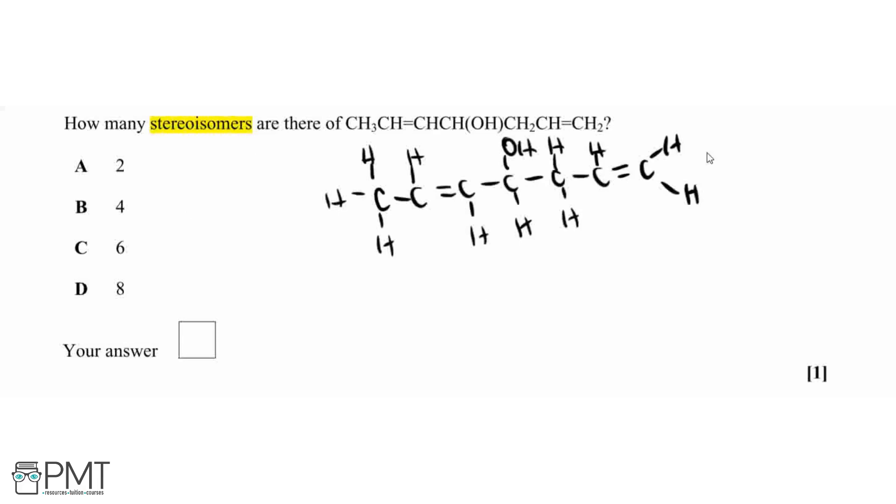Looking at this compound, we can see we've got two different double bonds. We're going to get stereoisomers for this double bond here, but not for this end region. The reason is because this end one has two of the same group attached to one carbon, therefore this will not have E or Z isomers.